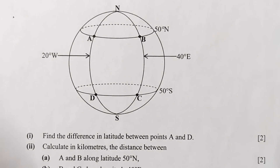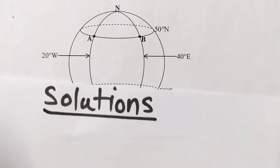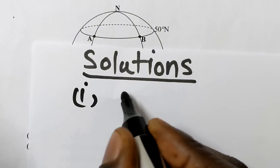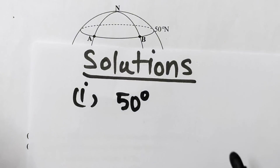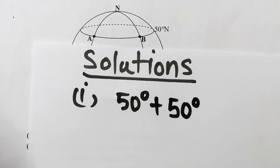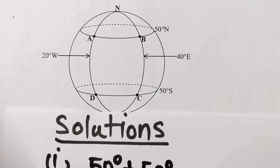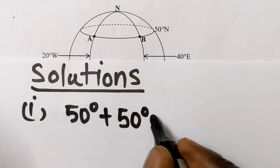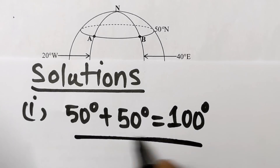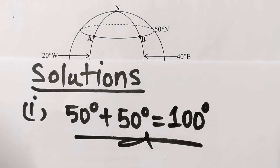So that is 50 degrees plus 50 degrees. Since A is on 50 degrees north and D is on 50 degrees south, the solution is just adding the two values. So for Roman numeral 1, we simply add 50 degrees plus 50 degrees, which gives us 100 degrees. So this is the answer to the first part.